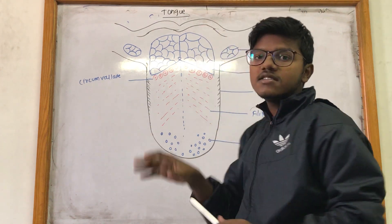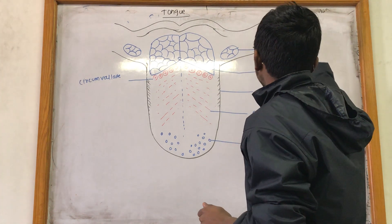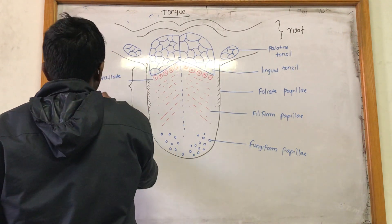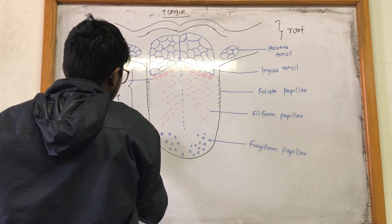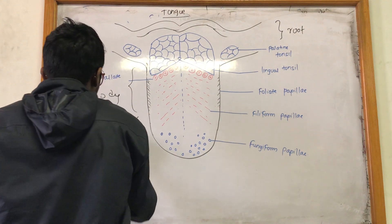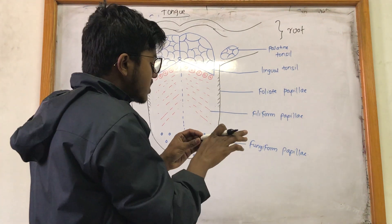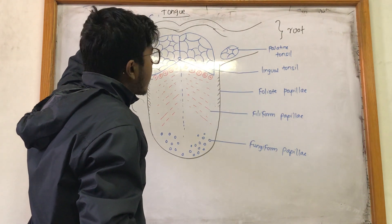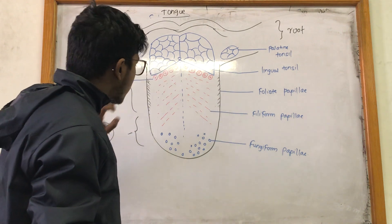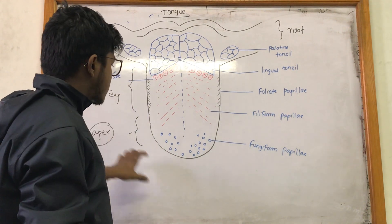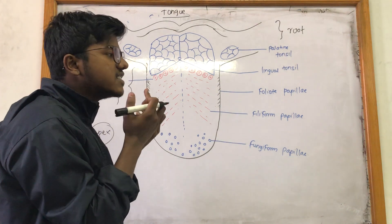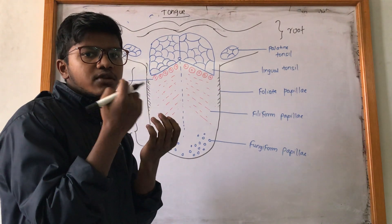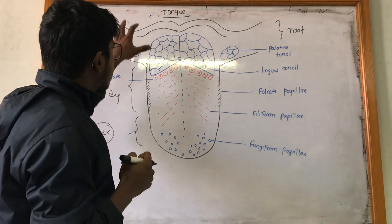The tongue is divided into three parts. First is the root, to which it is attached to the mandible and the hyoid bone. Second is the body, where the taste buds are located. Third is the apex, which lies against the incisor teeth.